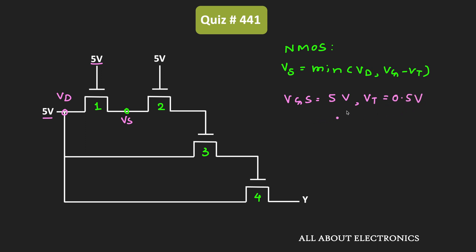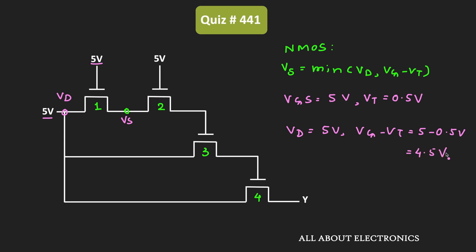The threshold voltage for each transistor is 0.5V. Since Vgs is more than the threshold voltage, this transistor will act as a closed switch and will allow 5V to the source side. But while passing logic 1, there will be a threshold voltage drop across this transistor. The output will be the minimum of Vd and (Vg − Vt). Here Vd = 5V, while Vg − Vt = 5 − 0.5 = 4.5V. So at this node, the output will be equal to 4.5V.